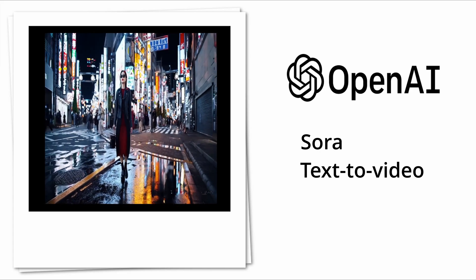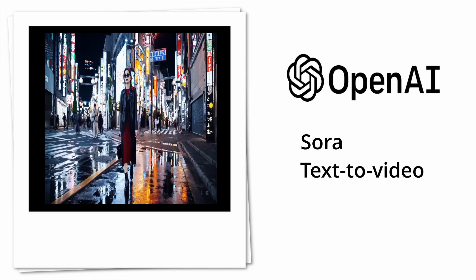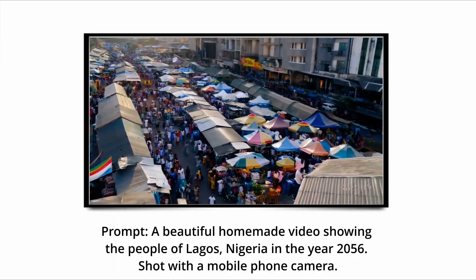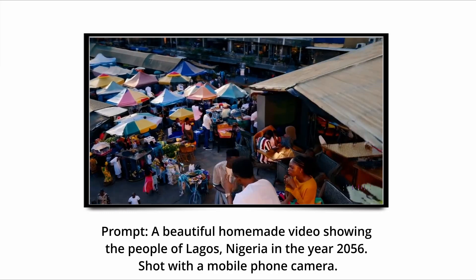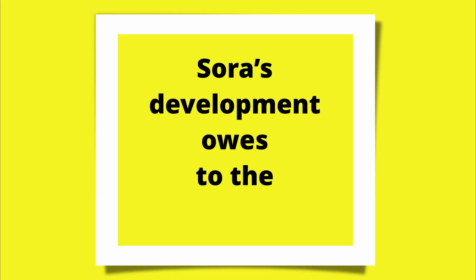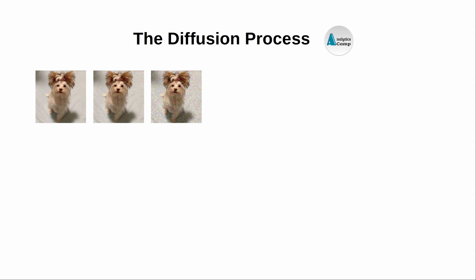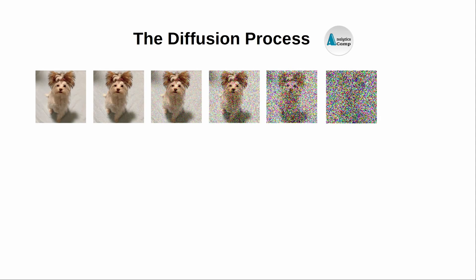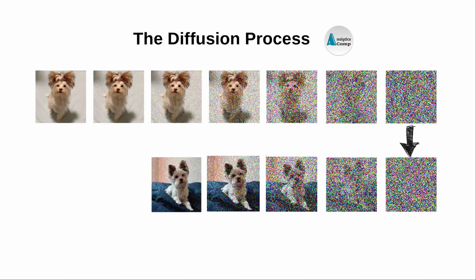OpenAI announced the development of their text-to-video model Sora on the 15th of February. We all watched how simple prompts such as this were translated into realistic video. Sora's development owes to the diffusion model. The diffusion process involves starting with the initial data and progressively disturbing it with intensifying random noise, then successively removing the noise to generate new data samples.